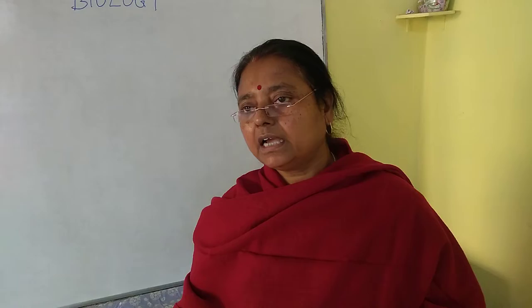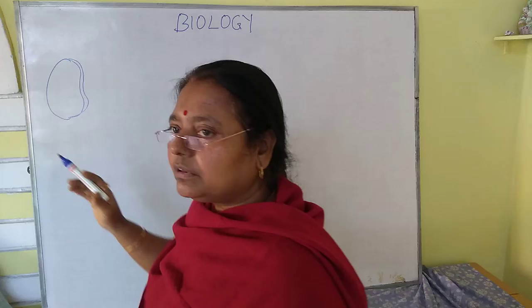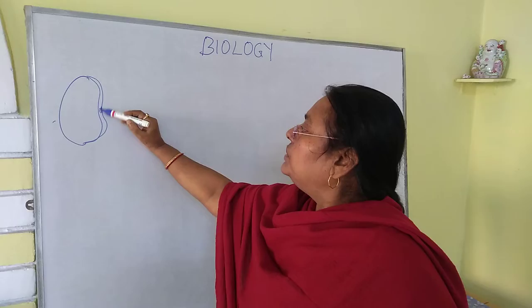Let's take a dicotyledonous exalbuminous seed first — the bean seed. The bean seed is kidney-shaped, or reniform, with a concave margin and a convex margin. On the concave margin we find the hilum and the micropyle.